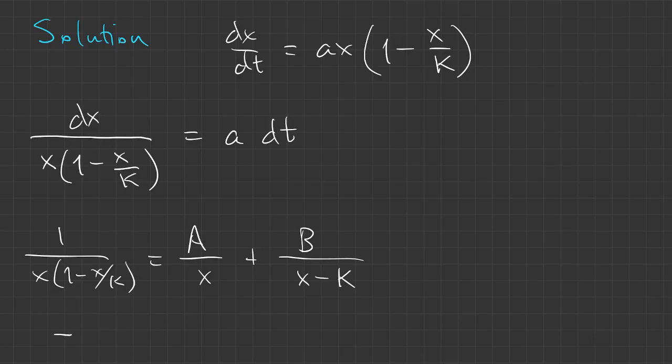Clear out the denominators. When we put in x equals zero, we find that a equals one. When we put in x equals K, we find that b equals negative one.